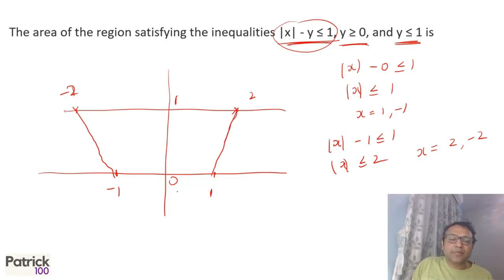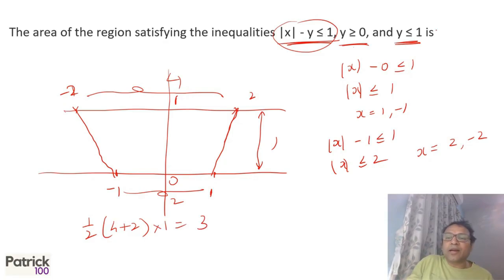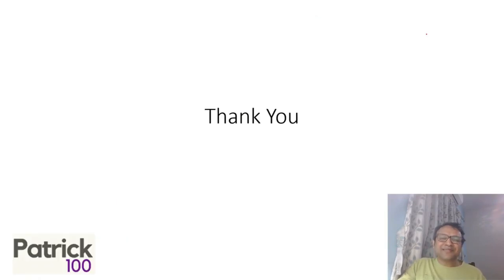If you draw, you get a trapezium. Area of trapezium is ½ × sum of parallel sides. This is 4, this is 2, so (4 + 2) × height. Height is 1 because from 0 to 1 is 1. You'll get 3. So automatically you get the area as 3 and that will be the answer for this. Just draw, figure out the diagram. It's just the area of trapezium which you can find out and get the answer. I hope it's clear. Thank you.